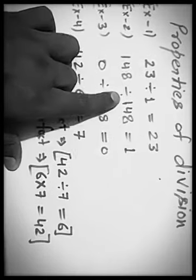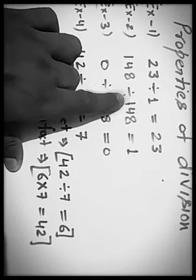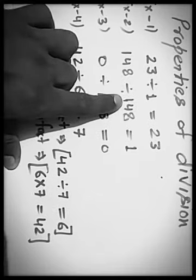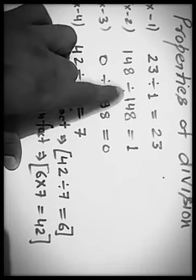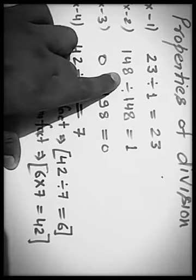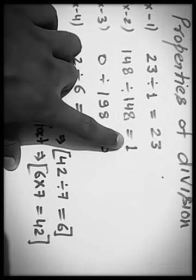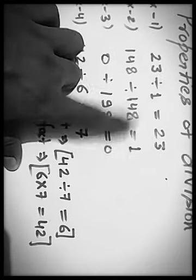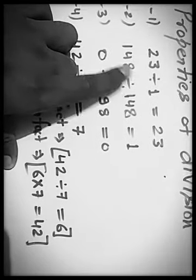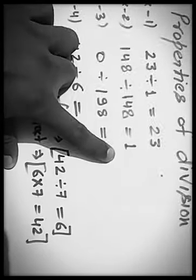Now, second property. If a number other than 0 is divided by itself, it means 148 divided by 148, same number, then we will get 1 as quotient. Similarly, 25 divided by 25, 1. 1 lakh divided by 1 lakh, 1.